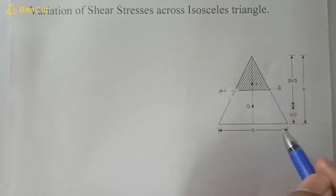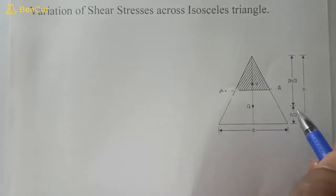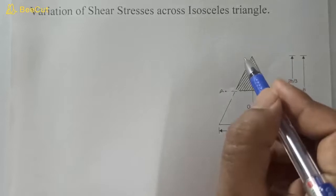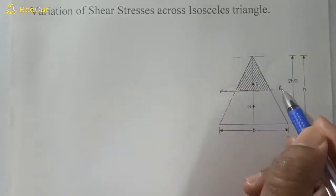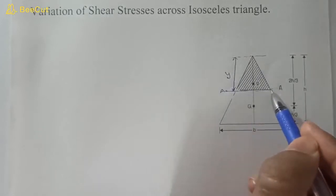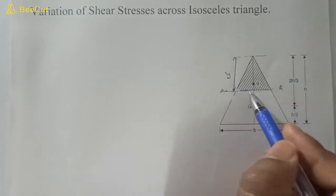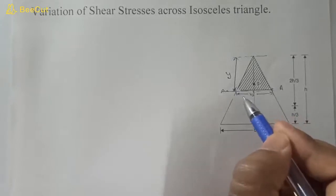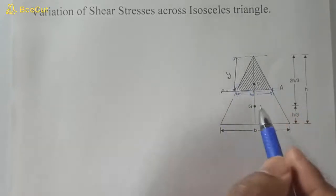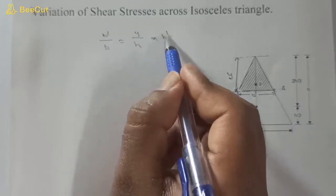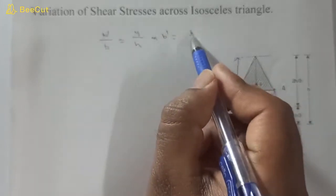This is the triangle with width b and height h, and this is the centroid of the triangle. The distance from the top to the centroid is 2h/3, and from the centroid to the base is h/3. We take a section AA at distance y from the top fiber, giving a smaller similar triangle above it with width b_dash and height y. By similarity: b_dash/b = y/h, so b_dash = by/h.